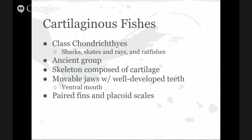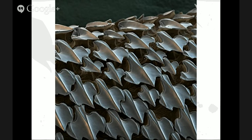Let's move on and talk about class Chondrichthyes, or cartilaginous fishes, which is composed of sharks, skates and rays, and ratfishes. This is an ancient group of fishes and they have a skeleton composed of cartilage. They have movable jaws with well-developed teeth and paired lateral fins that make them very efficient swimmers. They have a type of scale called placoid scales, which give them a rough sandpaper-like skin. Placoid scales are composed of the same structure as the teeth and also help reduce drag. Their mouth is ventral — positioned on the underside so their nose protrudes past their mouth, as seen in this microscopic picture of their placoid scales.